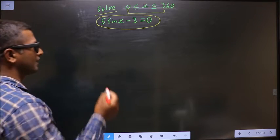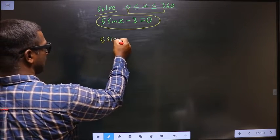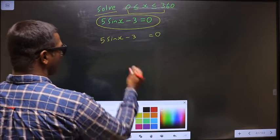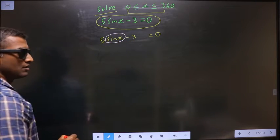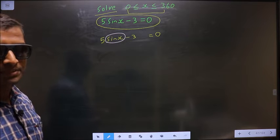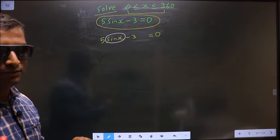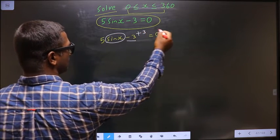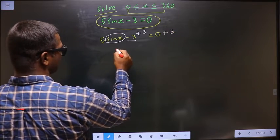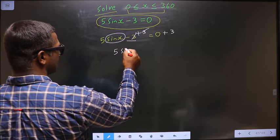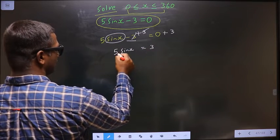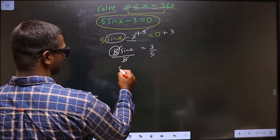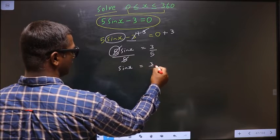The given equation is 5 sin x minus 3 equal to 0. You need to make sin x the subject, so remove all connections to sin x one by one, starting with minus 3. Add 3 on both sides to get 5 sin x equal to 3, then divide by 5 on both sides to get sin x equal to 3 by 5.